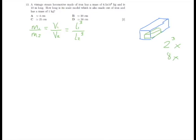Let's plug some numbers into our calculations here. So we know the mass of this full size steam locomotive is 6.5 times 10 to the power of 4 kilograms, and we know that the mass of the scale model is only 1 kilogram, and that's going to be equal to the length of the full scale model, which is 10 meters cubed, divided by L2 cubed.